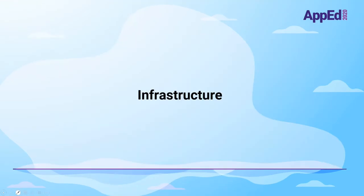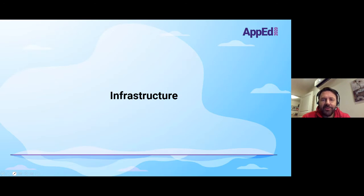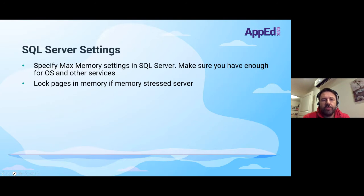Do you have any advice, Lifecore, when it comes to infrastructure to make sure it goes like a Ferrari? I'd like to talk about some small tips and tricks on how to get the best performance and best practices for a PIMS infrastructure setup. Starting with SQL Server settings: the most important thing is to specify your maximum memory and make sure you have enough for the OS and other services.